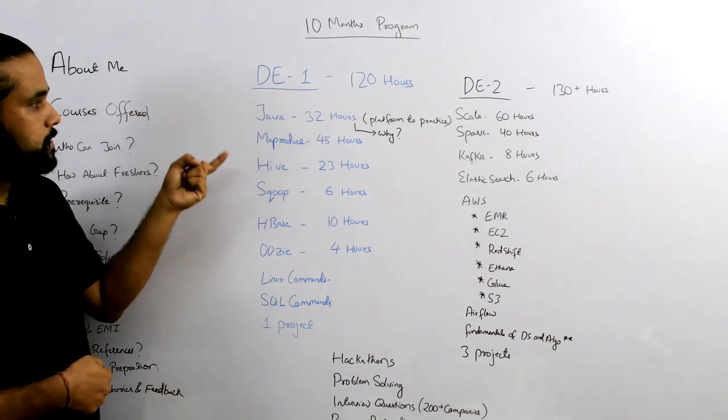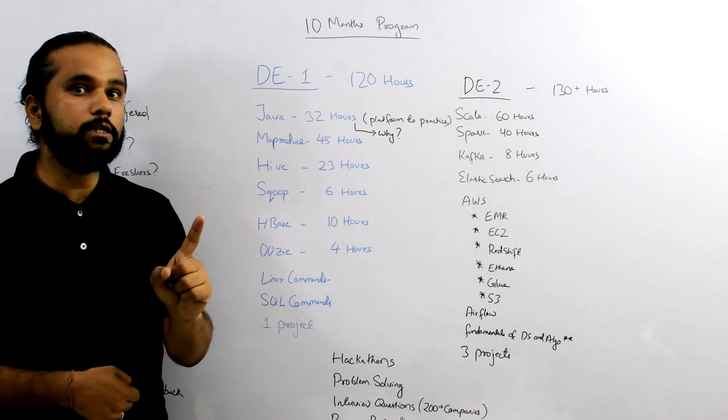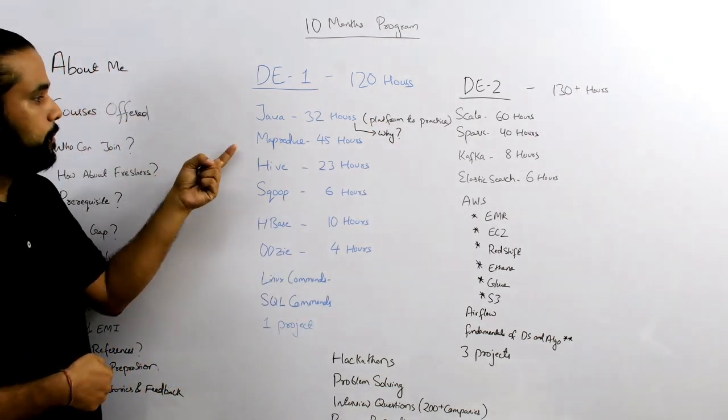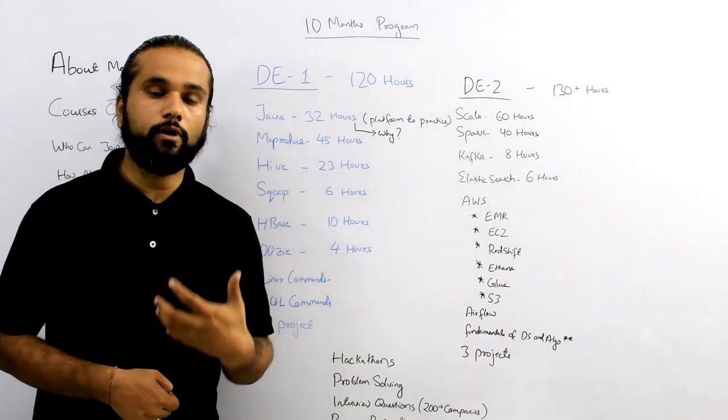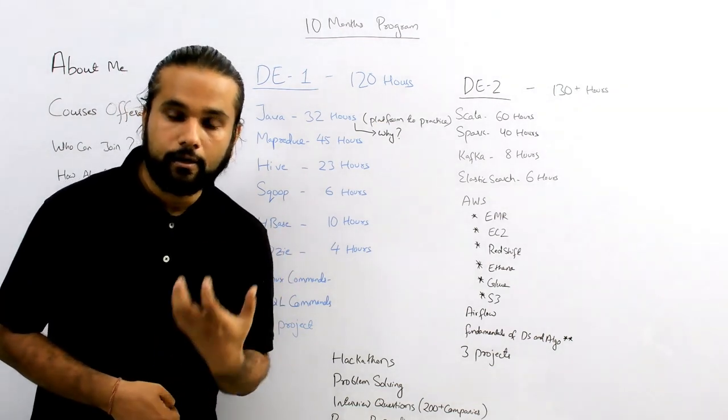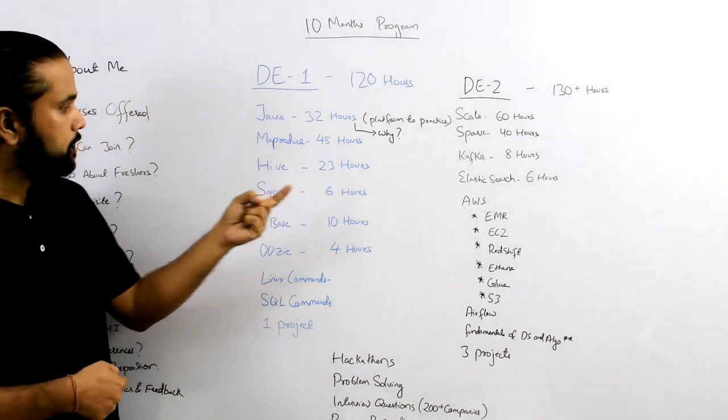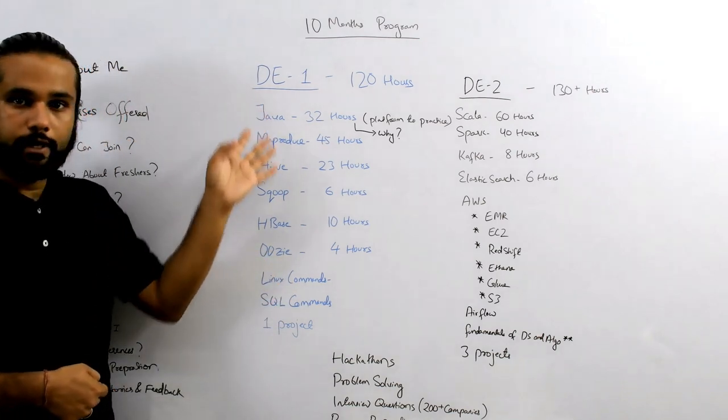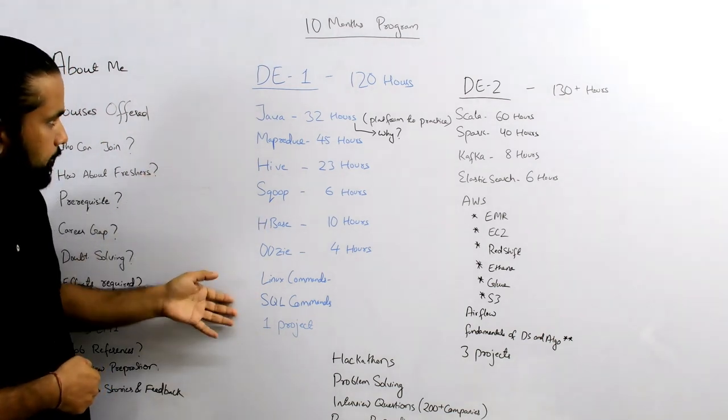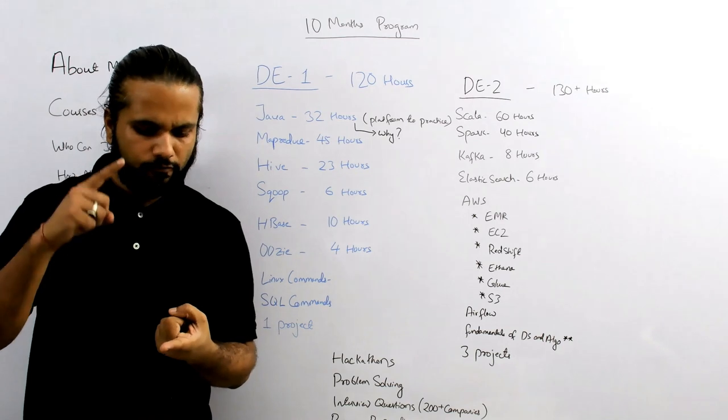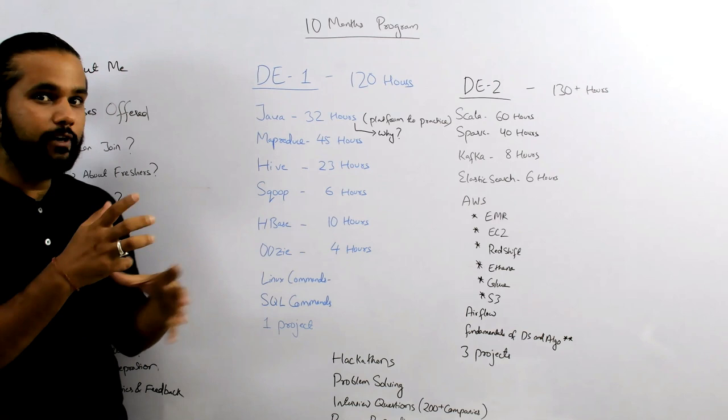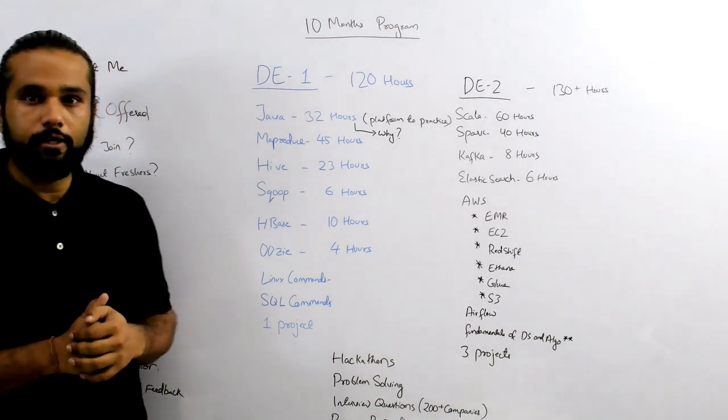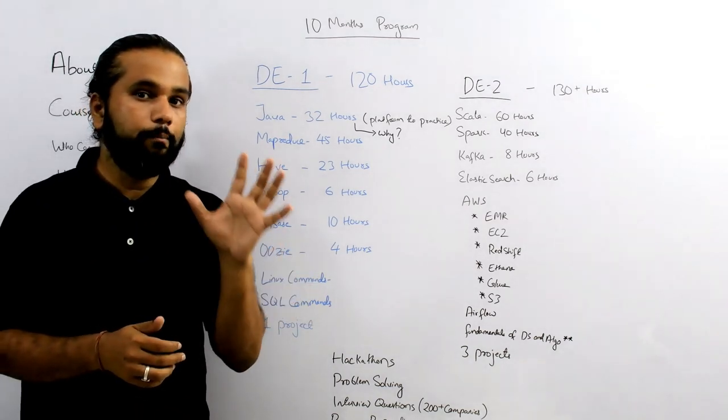Data engineering one starts with basic fundamentals of Java programming. We'll learn Java for a month, followed by lots of problems to improve your skills. After this, we'll learn MapReduce in great detail to help improve your thinking capabilities in big data. Then we have Hive for 23 hours, Sqoop for six hours, HBase for 10 hours, Oozie for four hours. This course will also cover Linux wherever required, as well as SQL commands in Hive. In this whole DE1 program, we'll do one project that's very complicated and requires writing customized code and MapReduce.